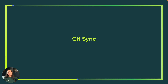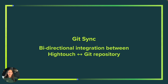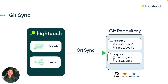The first feature we'll go over is our GitSync capability. GitSync is a bi-directional integration between your Hitech workspace and a Git repository. Once you've configured GitSync, whenever you create a model or sync in the Hitech UI, its configuration details are written to YAML files in your Git repository, and any updates to your models or sync configurations automatically update those YAML files.